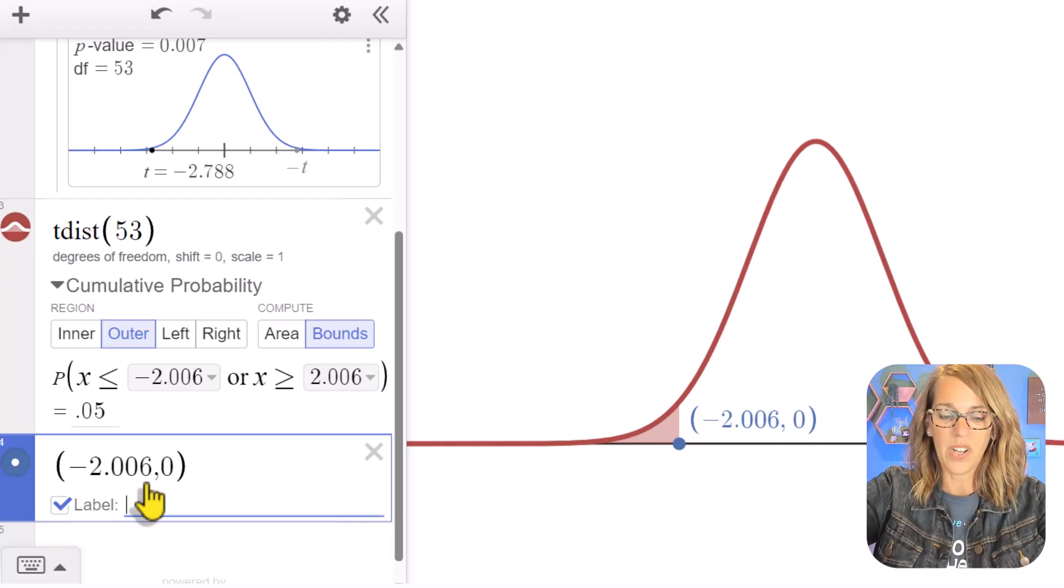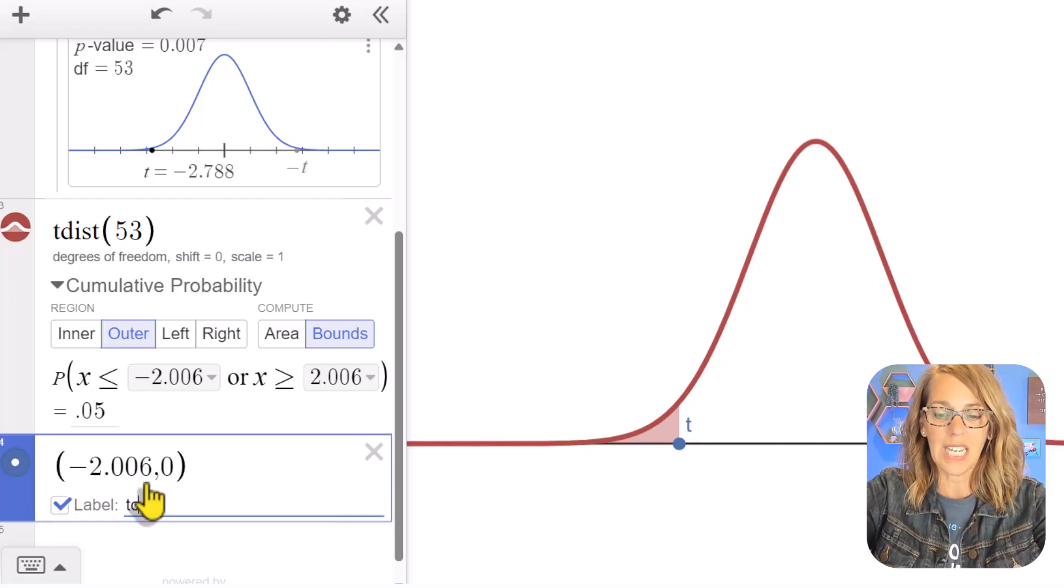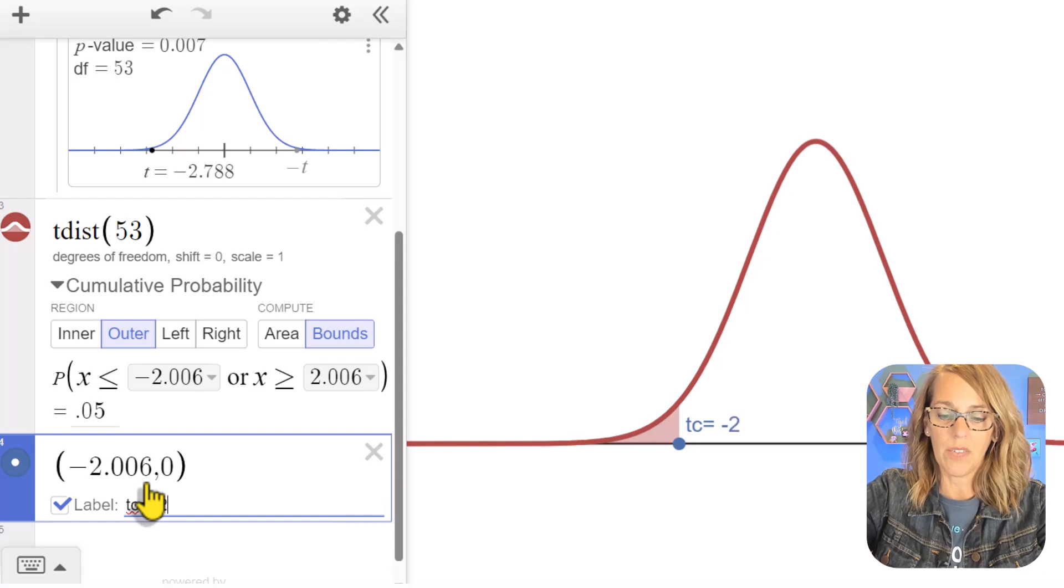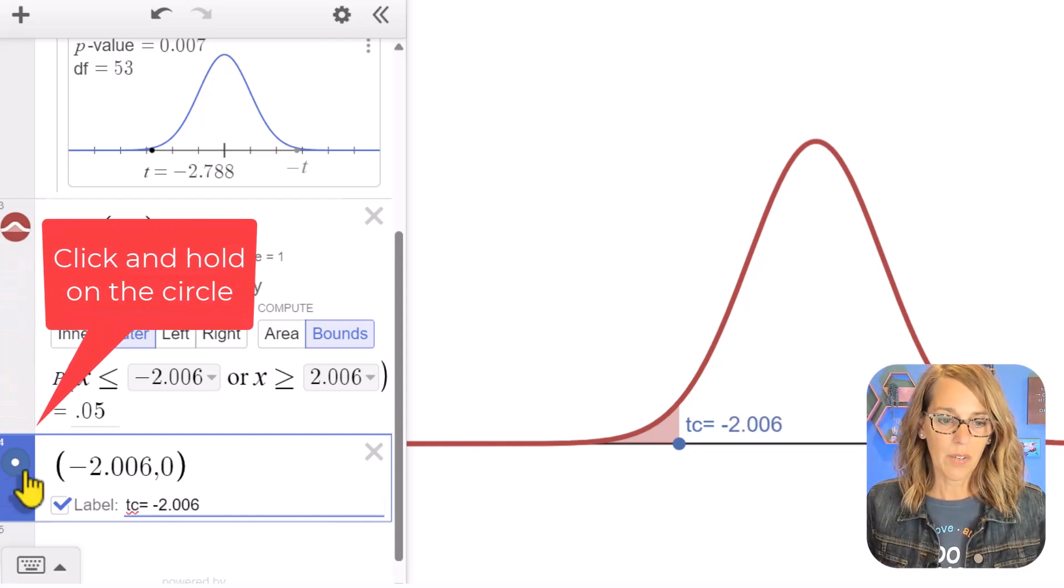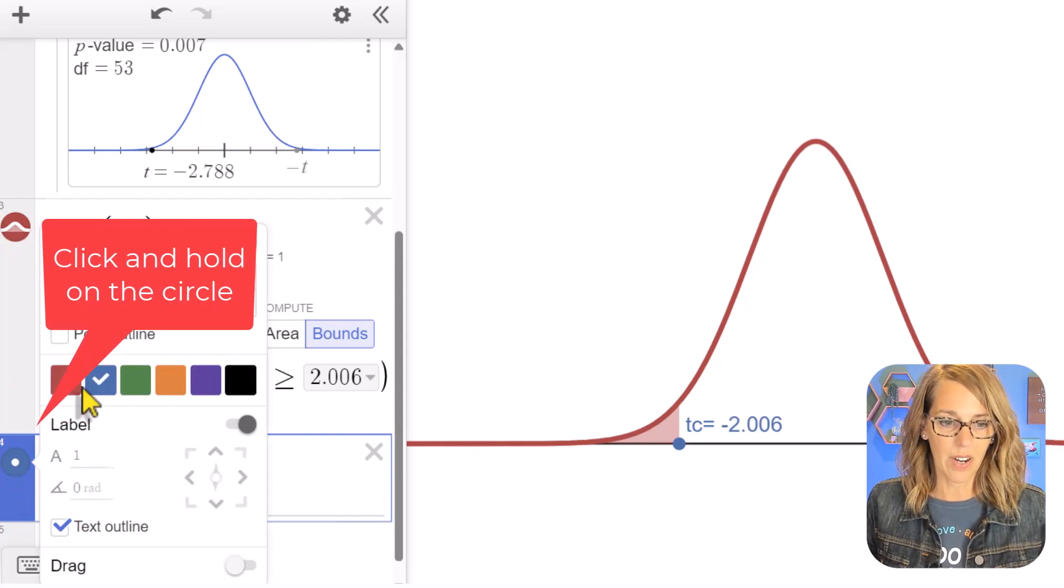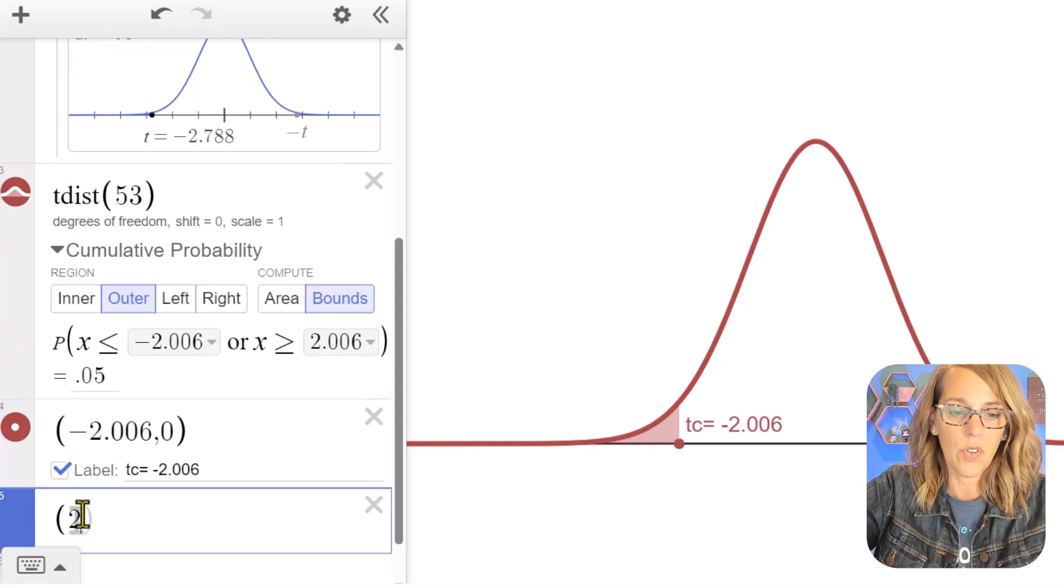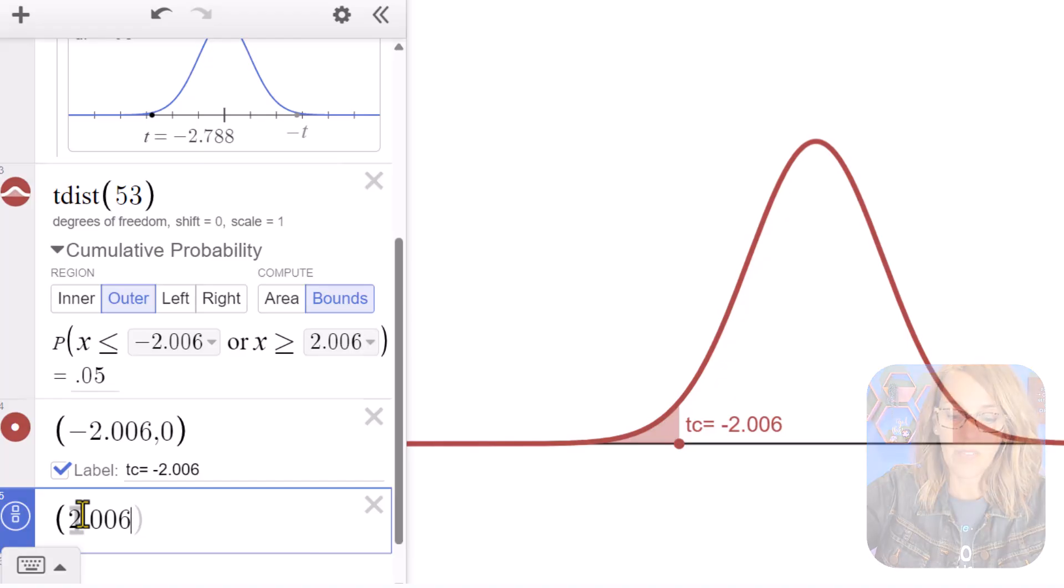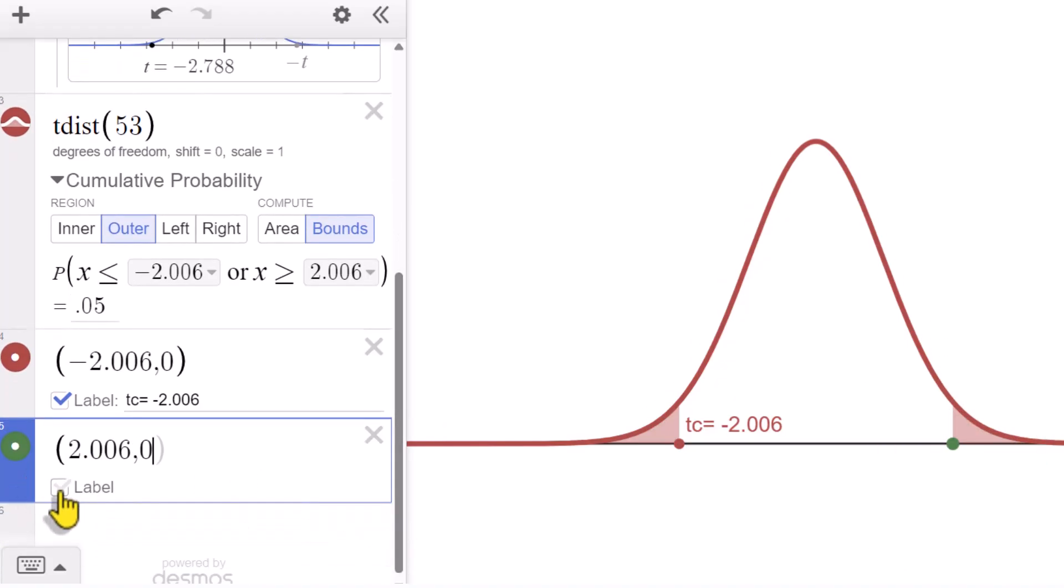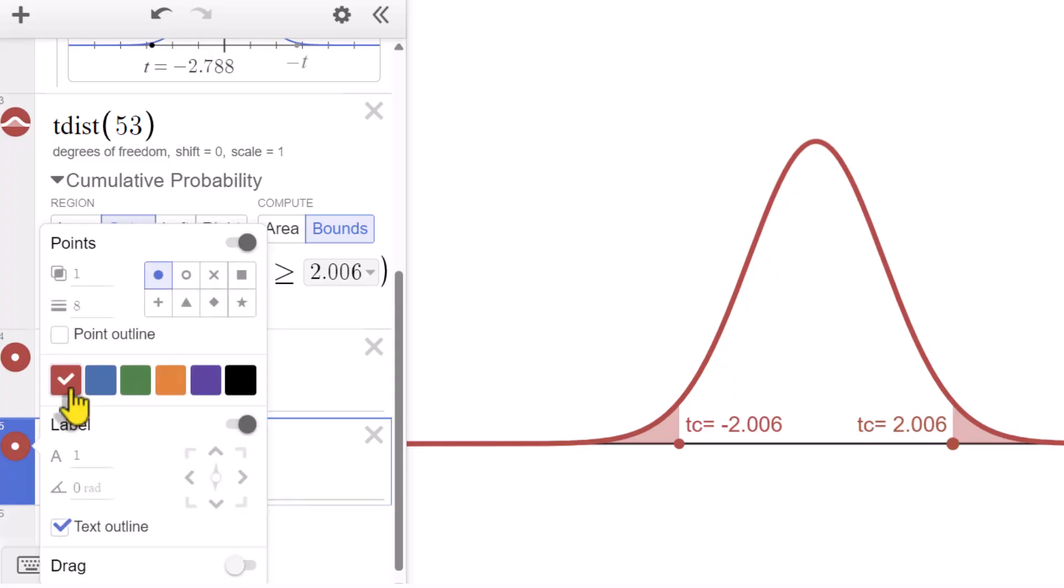This is going to be my critical value, tc is equal to negative 2.006. I want it to be red to match what I've got there in the graph. Red and I'm just going to leave it where it is. Let's do the other one. So 2.006, the positive cutoff comma zero, and I want to label this one as well. Label this one as well and this would be my positive critical t-value equals 2.006, and I want this one to be red as well. I'm just going to leave it there on the graph. Now let's put in my test value.